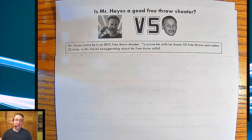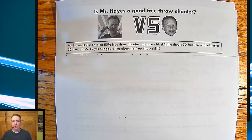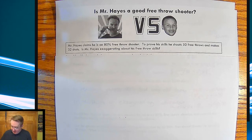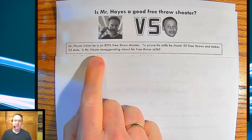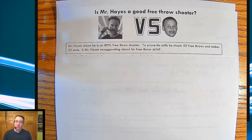While you're down there, like, comment, subscribe — all that other good stuff that your favorite creators like Mark Rober tell you to do. Maybe I can get to 300 subscriptions. Anyway, so Mr. Hayes claims that he's an 80% free throw shooter. To prove his skills, he shoots 50 free throws and makes 32.